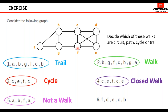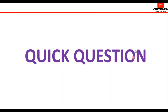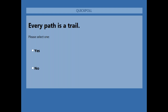Sixth example: F, D, E, C, B. No vertices are repeated and no edges are repeated, and the initial and final vertices are different. Therefore, this is a path.